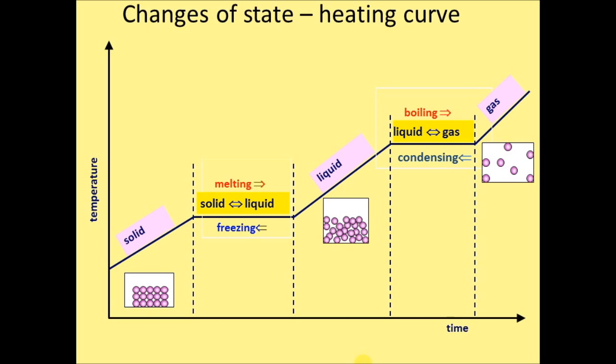The general trend of the line going left to right is an increase in temperature. But it isn't a straight line. You can see two places where the line goes flat. And this is where we go from a solid to a liquid, and from a liquid to a gas.